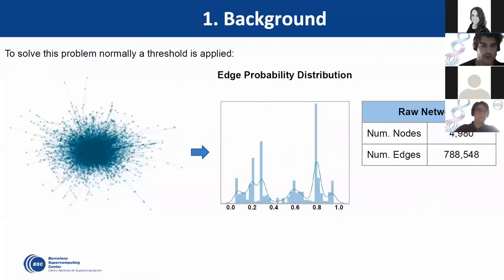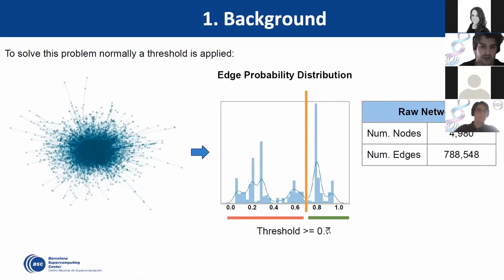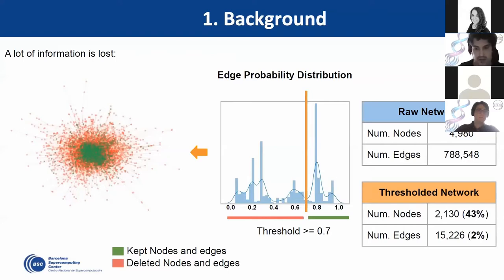Until now, the way we used this information was by applying thresholds. Here you can see a protein-protein interaction network from the STRING database with its edge probability distribution. When we choose a threshold — in this case 0.7 as recommended by the database — and apply it, the result keeps only 43% of the nodes and 2% of the total edges. So we are losing a lot of information with this protocol. Instead, there is another option: include this information in a probabilistic network model.